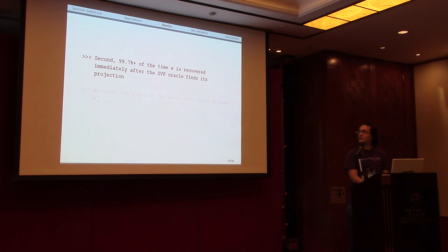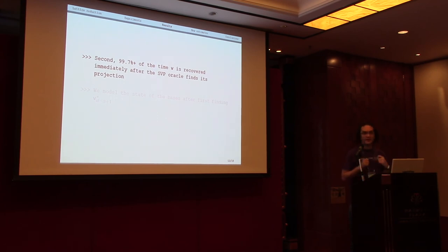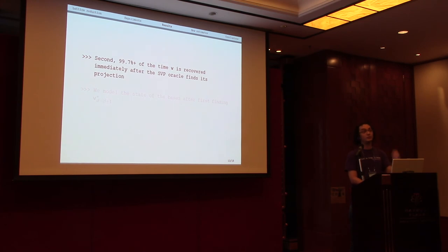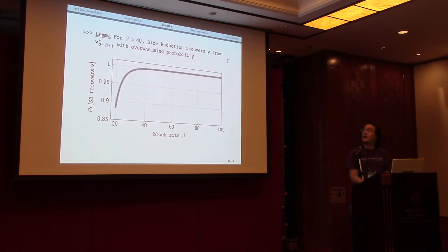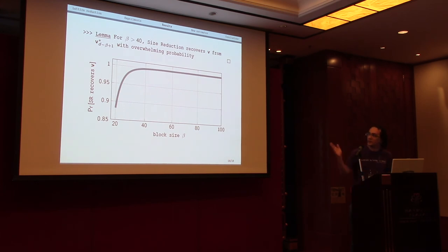The second unexpected observation is that instead of recovering the full secret vector progressively over O(d/beta) BKZ tours, after finding the first projection of the secret vector BKZ immediately calls LLL — specifically a size reduction sub-call — which recovers the complete secret vector in one step. We confirmed this happens consistently. A lemma shows that for block sizes larger than 40, which is entirely expected for cryptanalytic use, size reduction will recover the full short vector from the projection with overwhelming probability, bringing the recovery probability from ~90% up to 1 minus negligible.